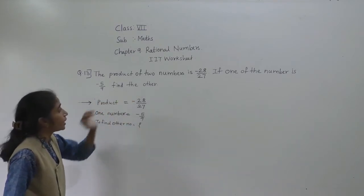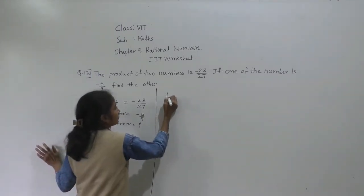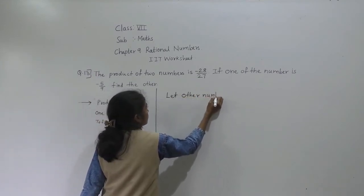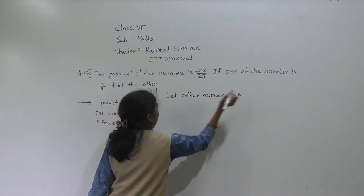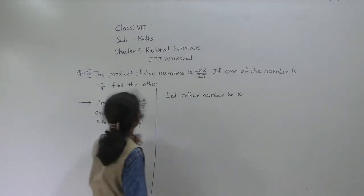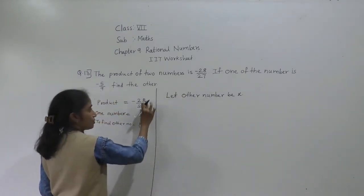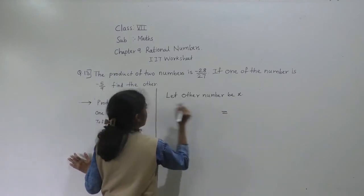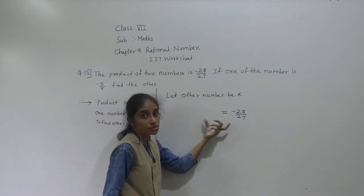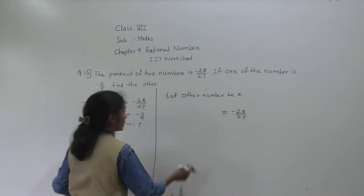The number which we don't know — find the other number. So let that other number be X. Now, it is given that the product of two numbers is minus 28 upon 27. The answer of multiplication is called product, so the product is minus 28 upon 27.